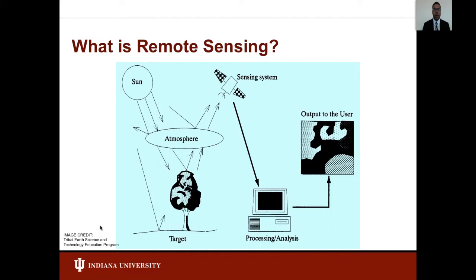The energy recorded by the sensor is transmitted to a receiving and processing station where the data are processed into an image. The processed image is then interpreted in order to better understand it and reveal new information for solving a particular problem.